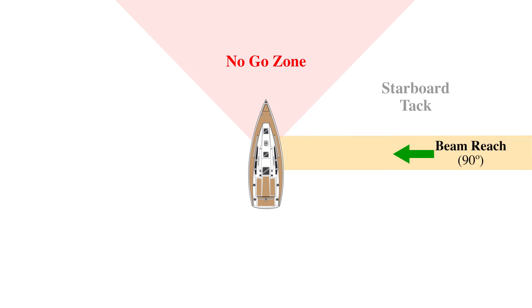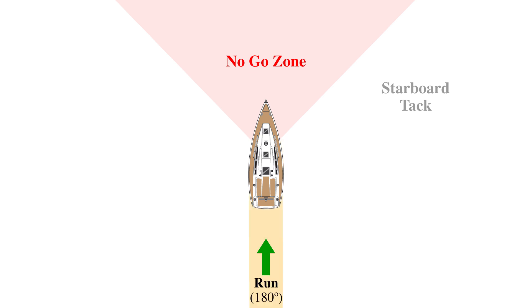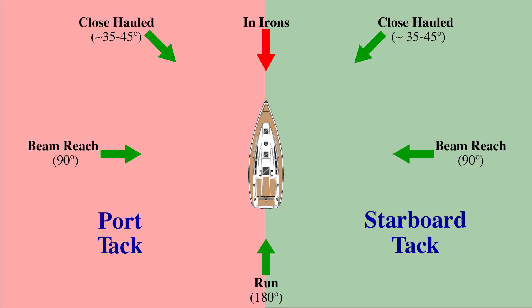When the wind strikes the boat at 90 degrees, we call that a beam reach. When the wind comes from 180 degrees, we are on a run or running. The points of sail are mirrored on either side of the boat. Each side is referred to as port or starboard tack. I will explain how to determine the tack of a boat in a little bit.